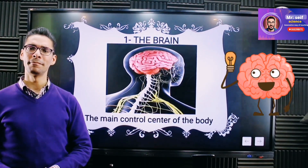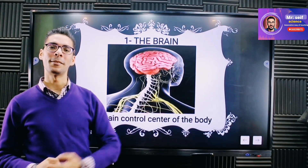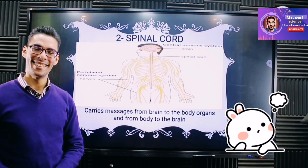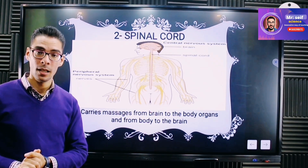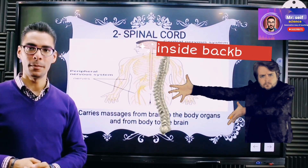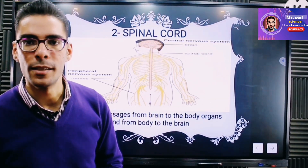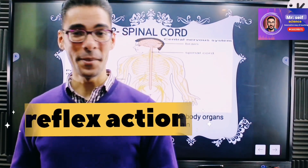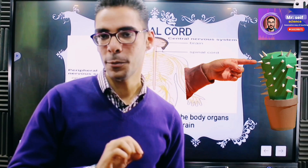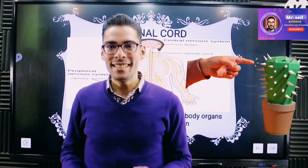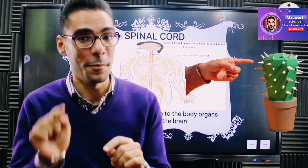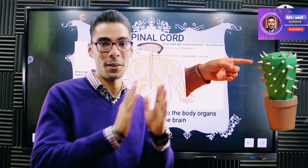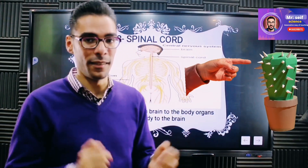Let's review. What is the function of the brain? The main control center of the body. What's the function of the spinal cord? It connects the brain with other body parts with the help of nerves. Where is the spinal cord located? Inside the backbone. Also, the spinal cord is responsible for something known as reflex action. Reflex action happens when you touch something really hot and you find yourself withdrawing your hand quickly — that's a reflex action to protect you. It happens in a time known as reaction time: the time taken to respond according to what is happening in the environment.